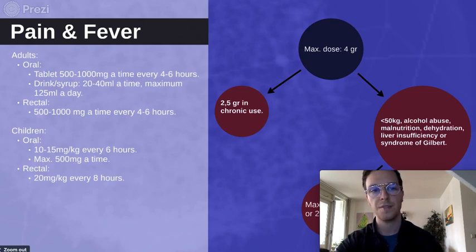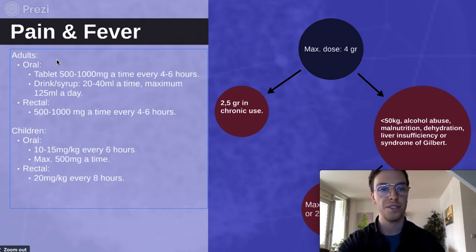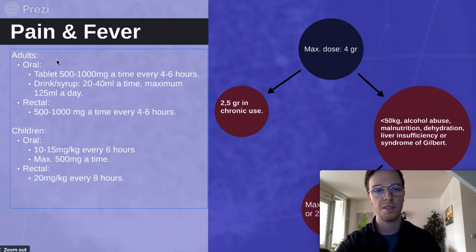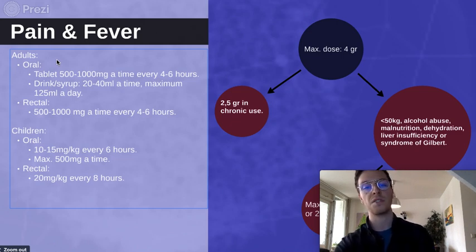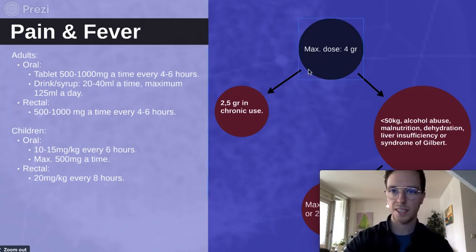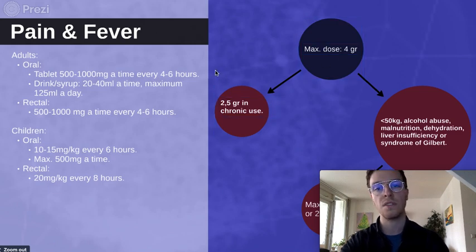Regarding dosage for pain and fever in adults using paracetamol orally: tablets of 500 to 1,000 mg are recommended at a time, repeated every 4 to 6 hours if necessary. Drinks and syrups are 20 to 40 ml at a time, to a maximum of 125 ml a day. Rectally, it's 500 to 1,000 mg, again every 4 to 6 hours if needed. The maximum dose is 4 grams a day if used sporadically. If used chronically, you should only use 2.5 grams a day, as higher doses can induce liver damage.